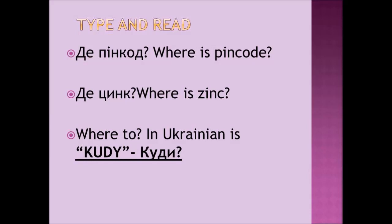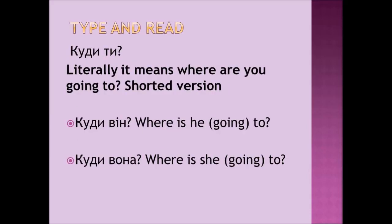'Where to' in Ukrainian is КУДИ. КУДИ. Let's see the examples with it. 'КУДИ ТЕ' — КУДИ ТЕ. Literally it means 'where are you going to?' It's like a shortened version. Where are you going to? КУДИ ТЕ.